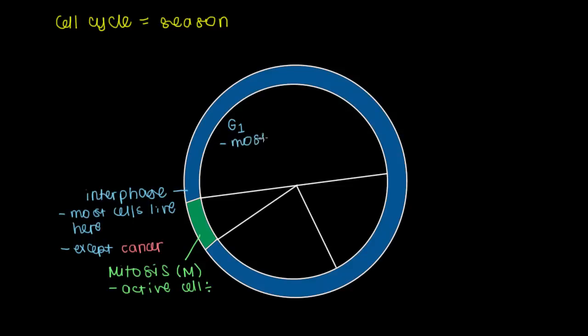G1 is the longest phase of the cell cycle. So most of a cell's life is spent here. And it's in this phase that we produce extra organelles, such as ribosomes, so extra organelles and proteins. So we make proteins that'll be useful when we get to the point for cell division.